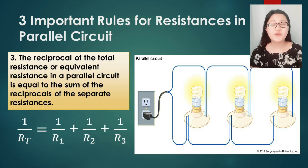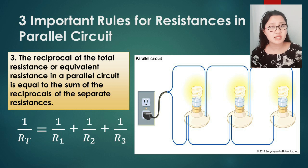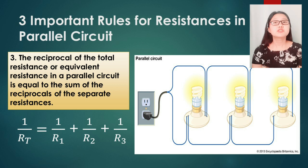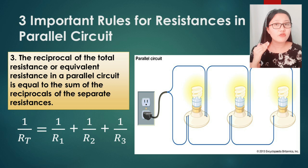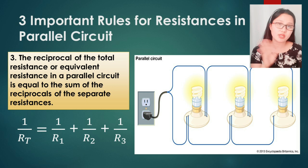For the third rule of a parallel circuit regarding resistance: the reciprocal of the total resistance — or equivalent resistance — in a parallel circuit is equal to the sum of the reciprocals of the separate resistances. The formula is 1/RT = 1/R1 + 1/R2 + 1/R3, depending on how many branches there are. Now, in our homes or at school, are we using a series connection or a parallel connection?